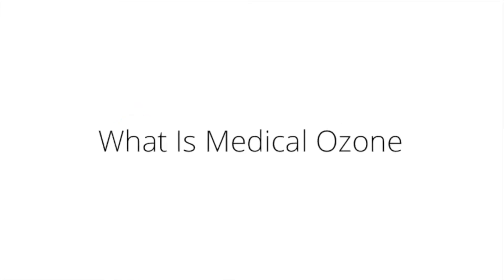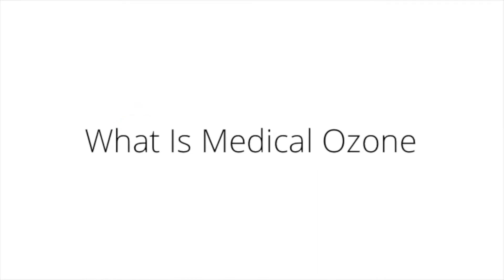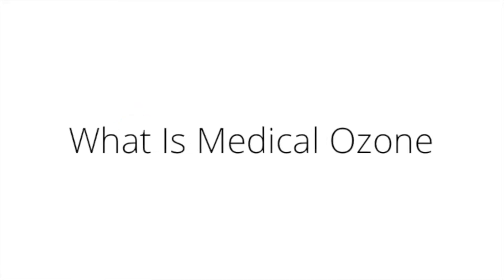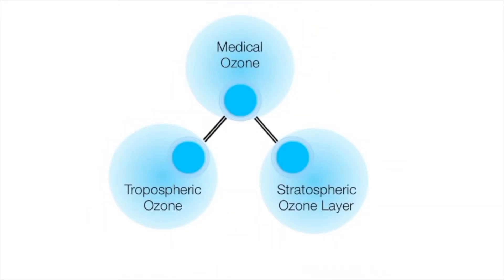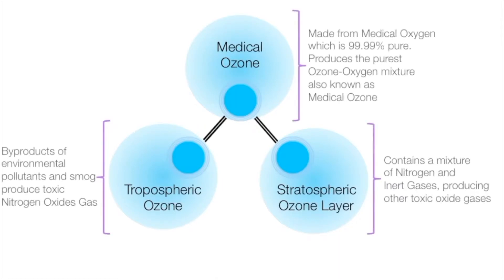So what is ozone and are there different types? There are three types of ozone: the ozone that makes up the ozone layer, tropospheric ozone, and medical ozone — the purest form of ozone, which is applied for therapeutic purposes only.